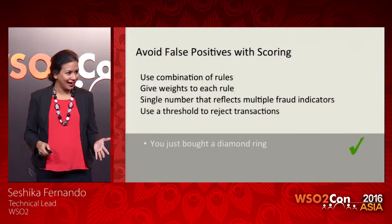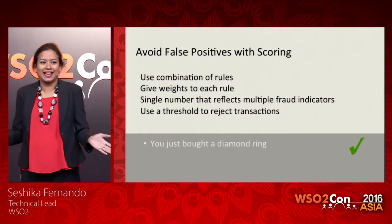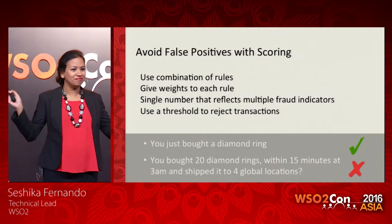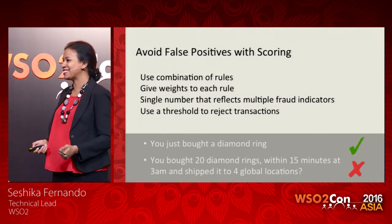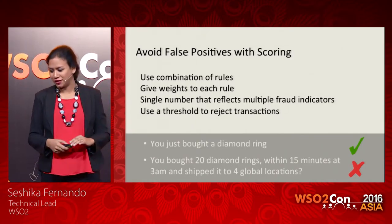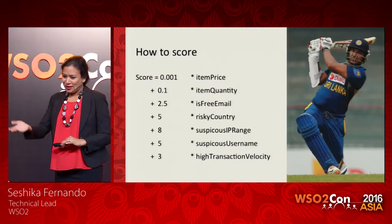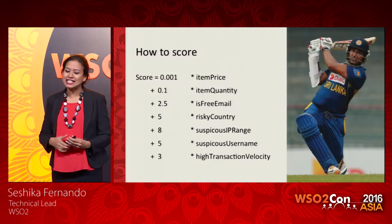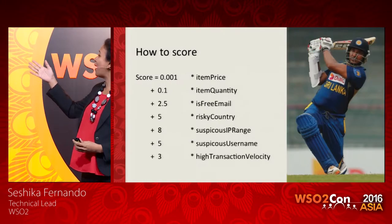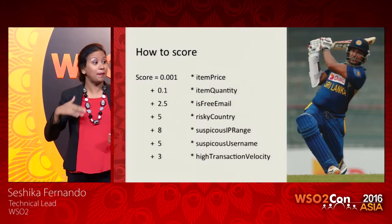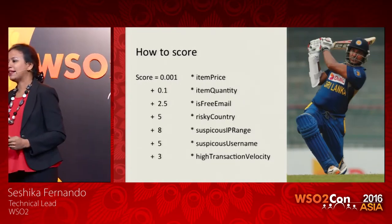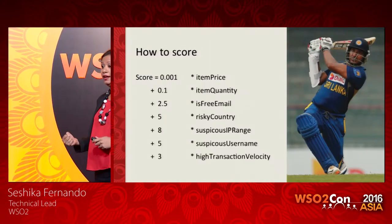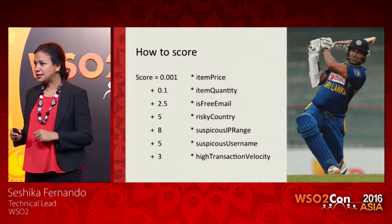We use scoring where we use a combination of rules, provide a weight to each rule, and derive a single number that reflects multiple fraud indicators for one transaction. We compare that single number with a single threshold and provide an alert only if the transaction has done badly against multiple fraud indicators. For example, if you bought 20 diamond rings within 15 minutes at 3 o'clock in the morning and shipped to various places around the world, we want to look at that further. We provide a weight to each fraud indicator depending on how significant it is, multiply by how the transaction performed against that indicator, sum it up, and alert only if the threshold is surpassed.